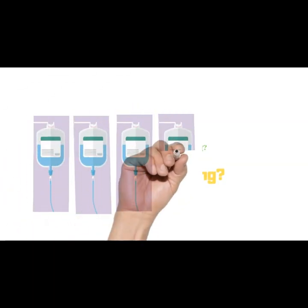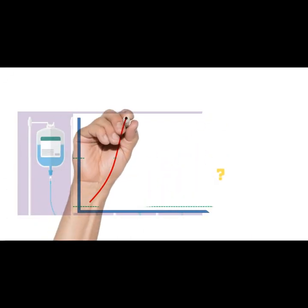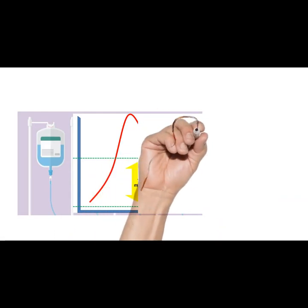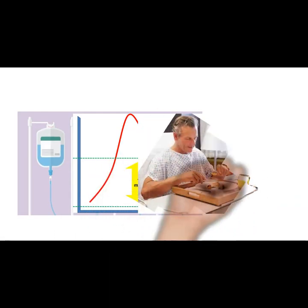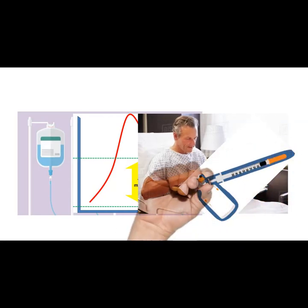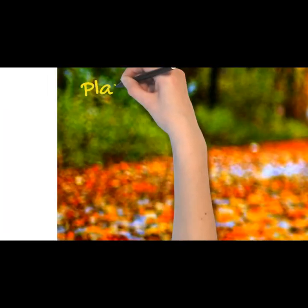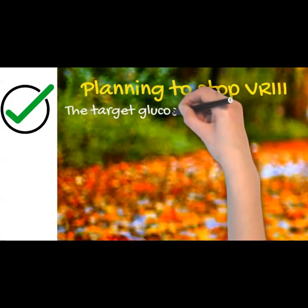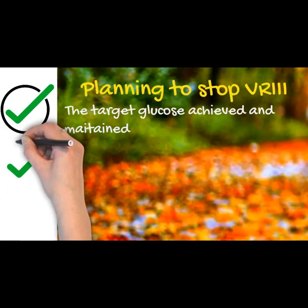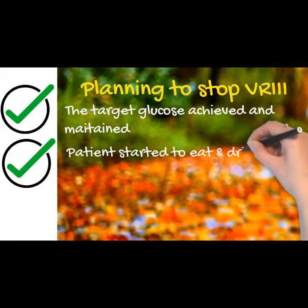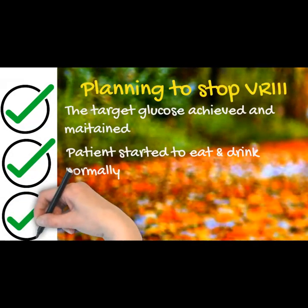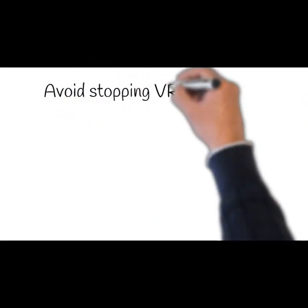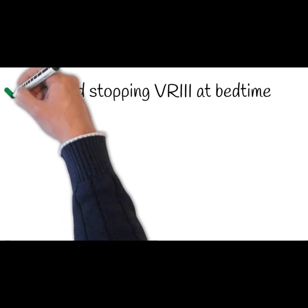How to stop VRIII: variable rate intravenous insulin infusion needs to carry on until hyperglycemia has been controlled and target glucose has been maintained and sustained over a period of a few hours, your patient has started to eat and drink normally, and they have been recommenced on their usual diabetes regime which may include insulin. If these three targets are achieved, you can safely say that they're ready to come off the variable rate IV insulin.